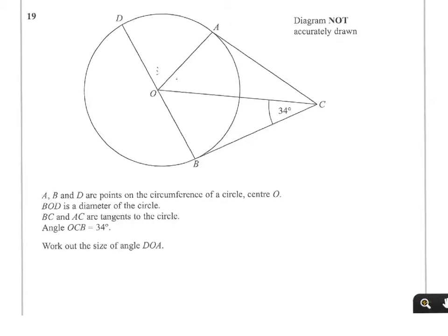A, B and D are points on the circumference of a circle with centre O. BOD is our diameter and BC and AC are tangents to the circle. We've got to work out the size of angle DOA, so I'll mark in what we're trying to find and call that X.